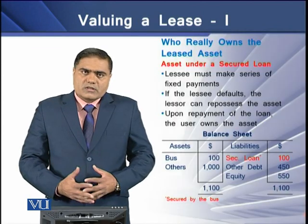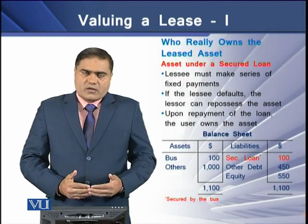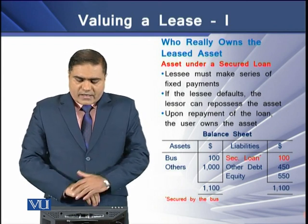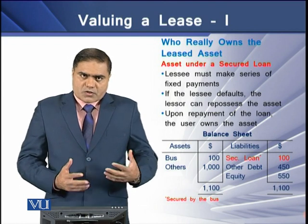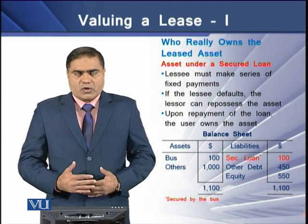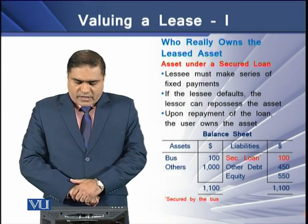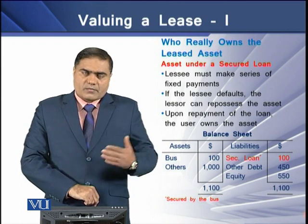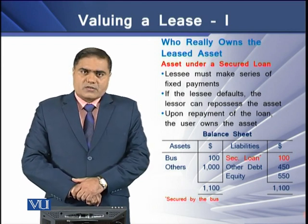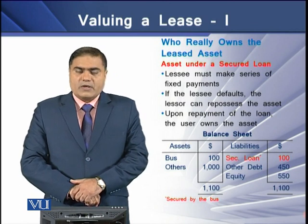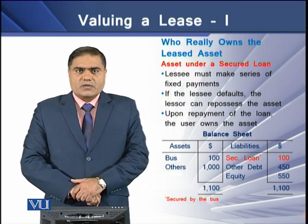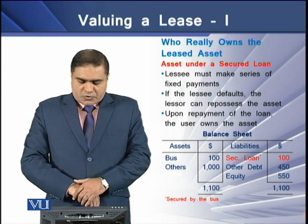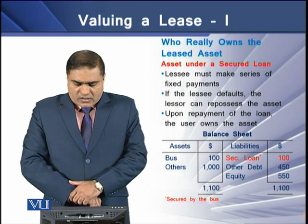Who really owns the asset — is it the lessor or the lessee? We see that if we acquire an asset under a secured loan, our balance sheet would look as follows: we have a bus of $100 placed on the asset side, we have other assets of $1,000, and on the liabilities side we place our secured loan along with other debt and equity. The balance sheet has a total of $1,100 on both sides.